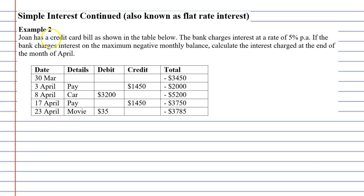In this case, Joan has a credit card bill as shown in the table below. The bank charges interest at a rate of 5% per annum. If the bank charges interest on the maximum negative monthly balance, calculate the interest charged at the end of the month of April.